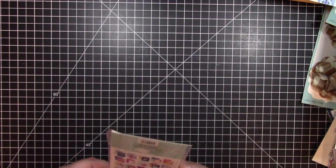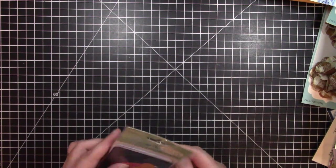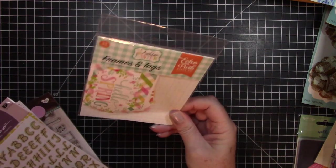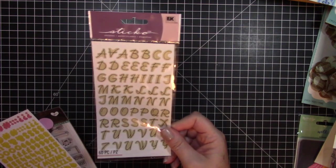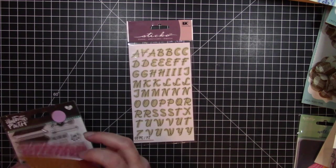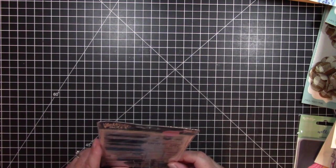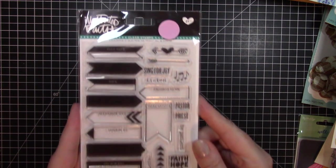Then we're back to some smaller stuff. These are journaling cards from My Mind's Eye. Here's all the different ones in there. Here we have some Echo Park frames and tags in Hello Spring, which I believe I have that collection. Here are some Sticko letters. Some yellow letters and pink letters. We have some stamps. These are Illustrates Faith. And it looks like it would be for Bible stamping or something, because it'll say Sermon by, things like that, Sing for Joy, stuff like that.